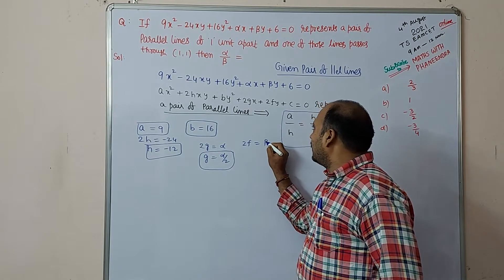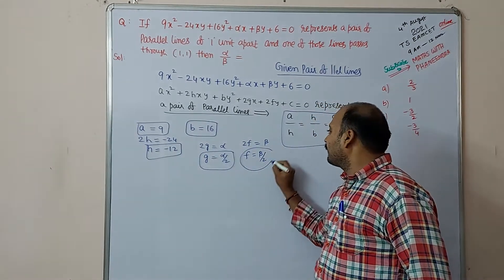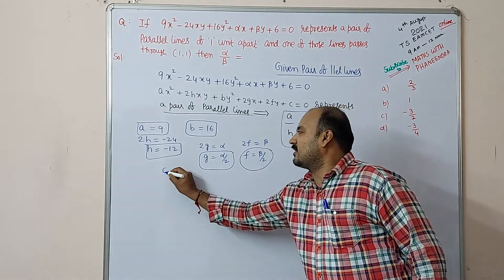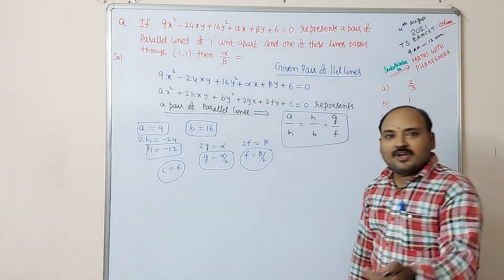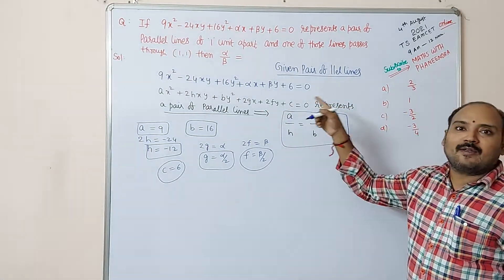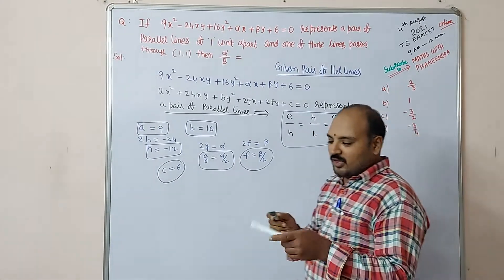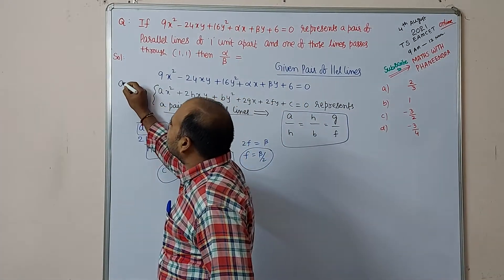2f = β, so f = β/2, and constant c = 6. Constant is not the criteria here. Whenever this pair of parallel lines, we know that other than this condition, generally in IPE in the proofs, we know that more important conditions are there.